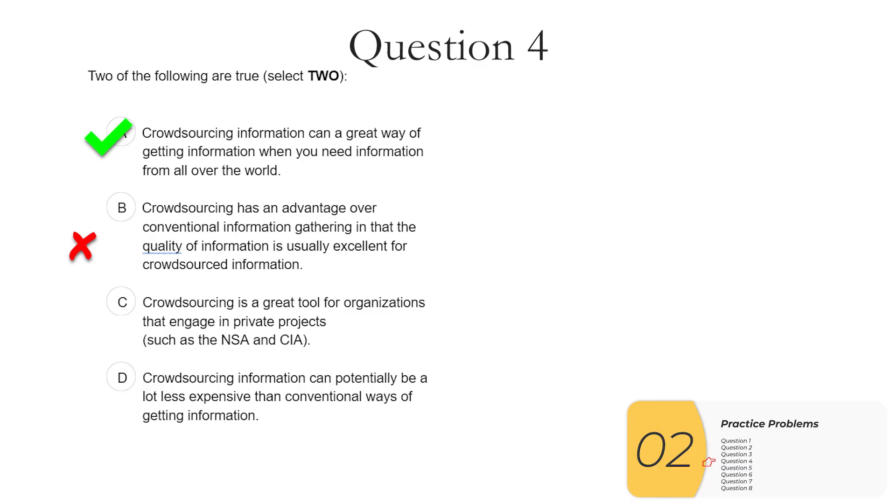C, crowdsourcing is a great tool for organizations that engage in private projects such as the NSA and CIA. This is definitely not true. If you're crowdsourcing, almost by definition, you're giving away kind of what you're doing. And if you're the NSA or CIA, you don't want to be doing that. So C is not true.